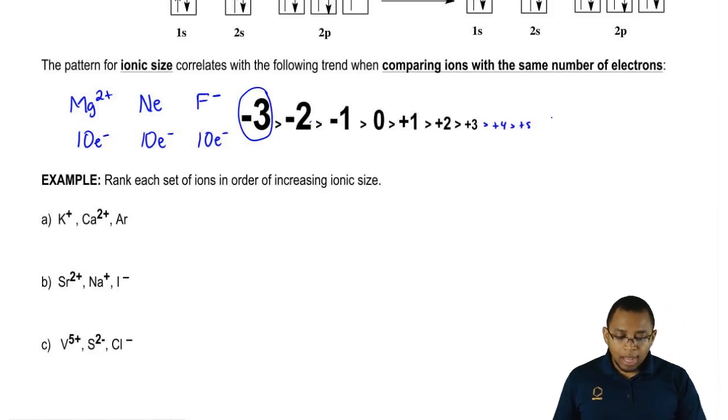We're going to say here, since they all have the same number of electrons, we're going to say F minus is the biggest because it has a negative 1 charge. Neon would be next because it's neutral, and then magnesium is plus 2, so it would be the smallest.